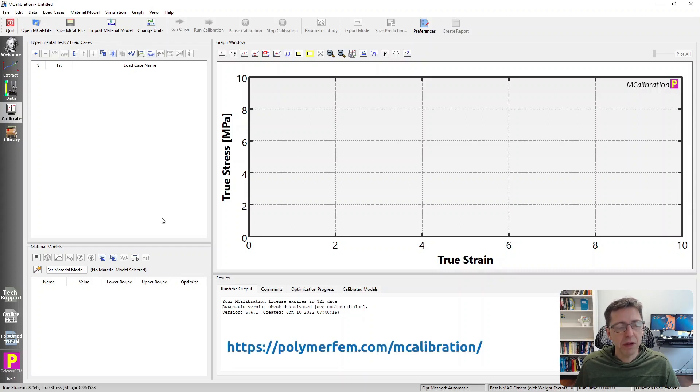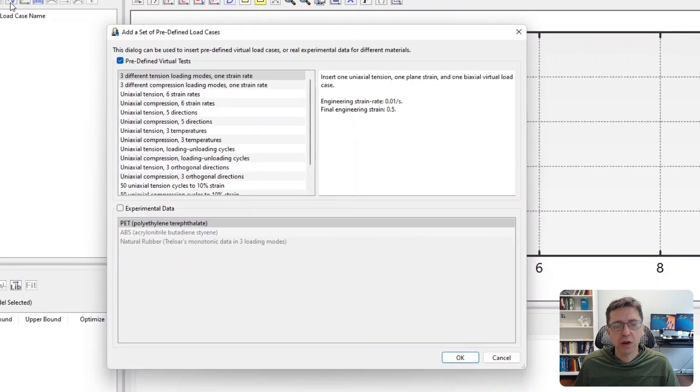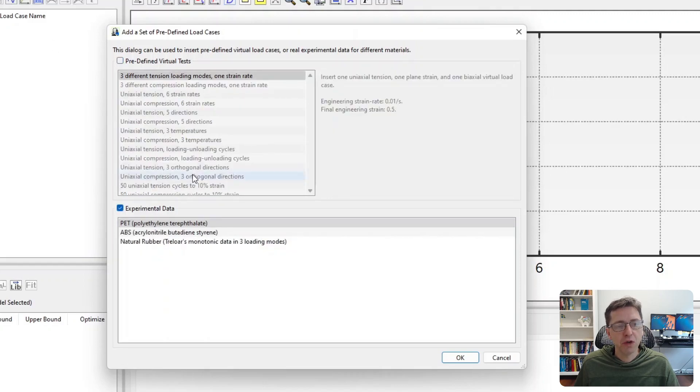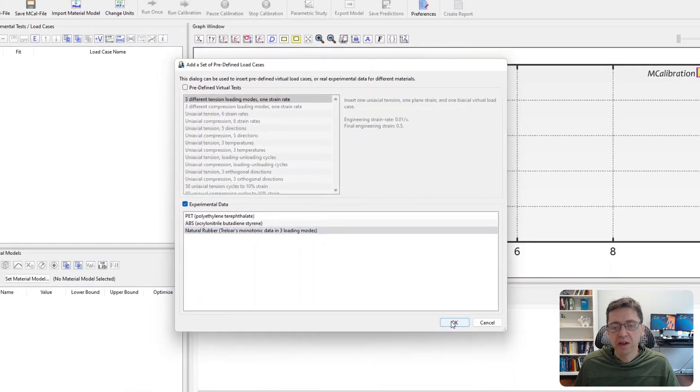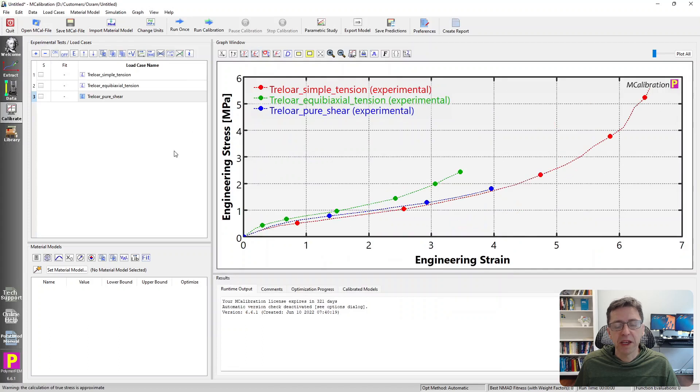And the way I will do this is I will add some experimental data. In the current version of MCalibration, you can add experimental data by clicking on the virtual load case button. And then I select experimental data, and I'm going to select natural rubber. This is data from Treloar back in the day.